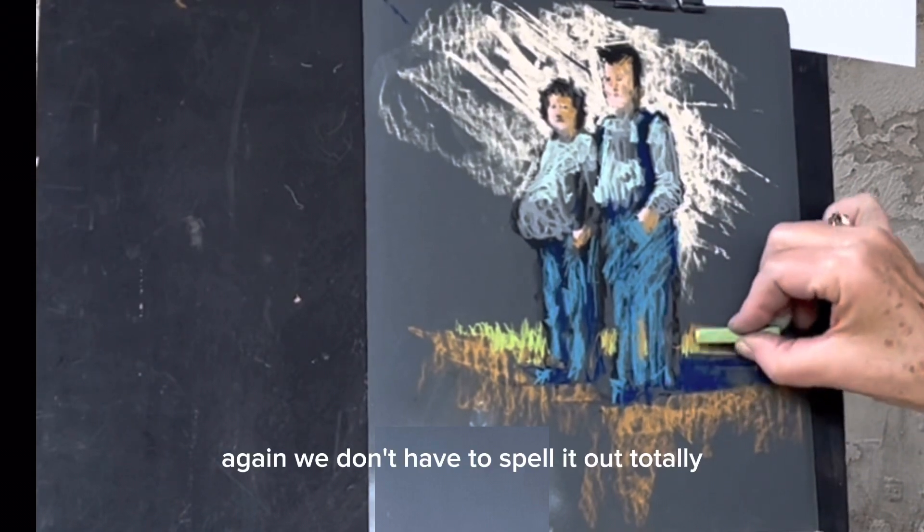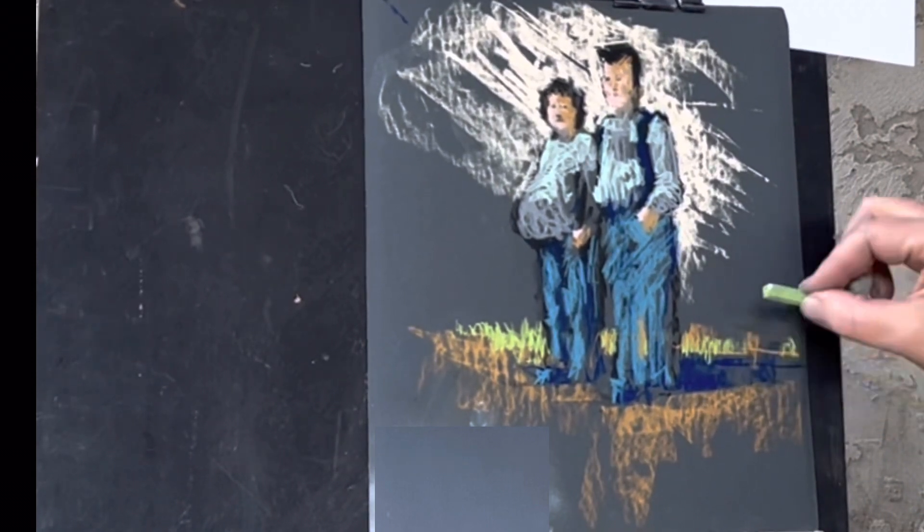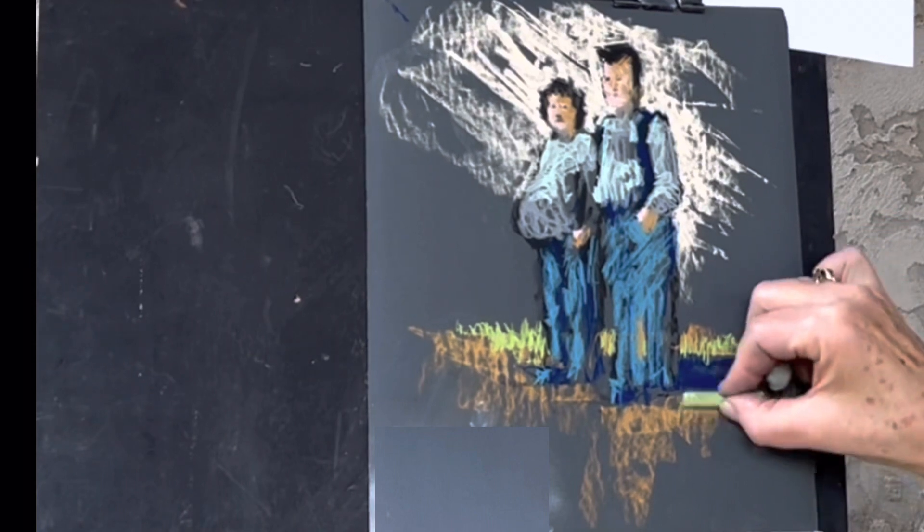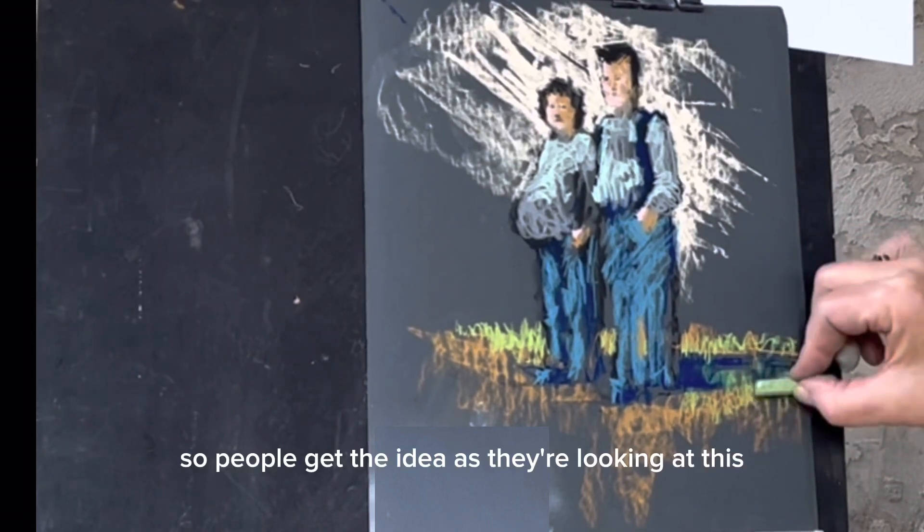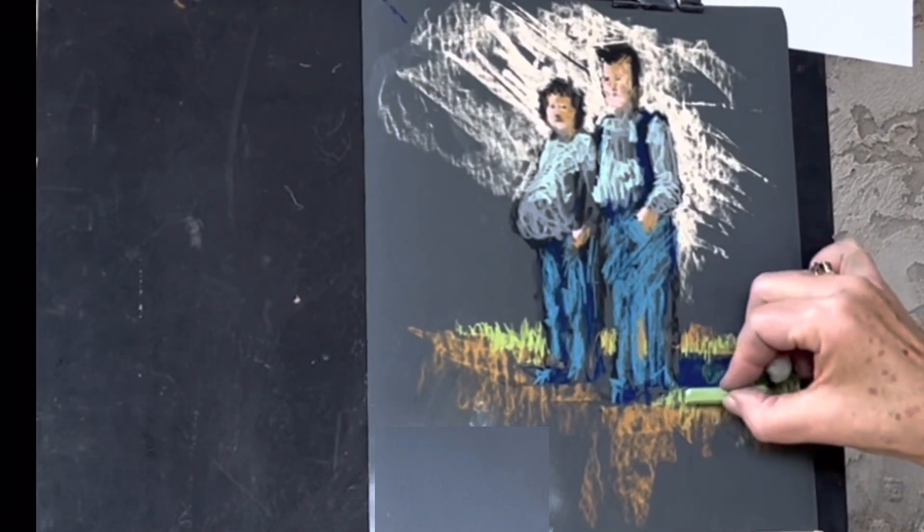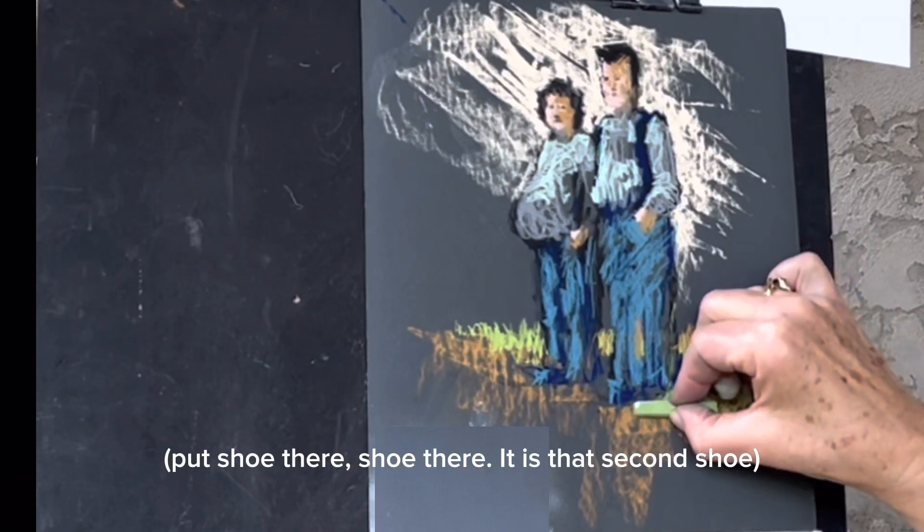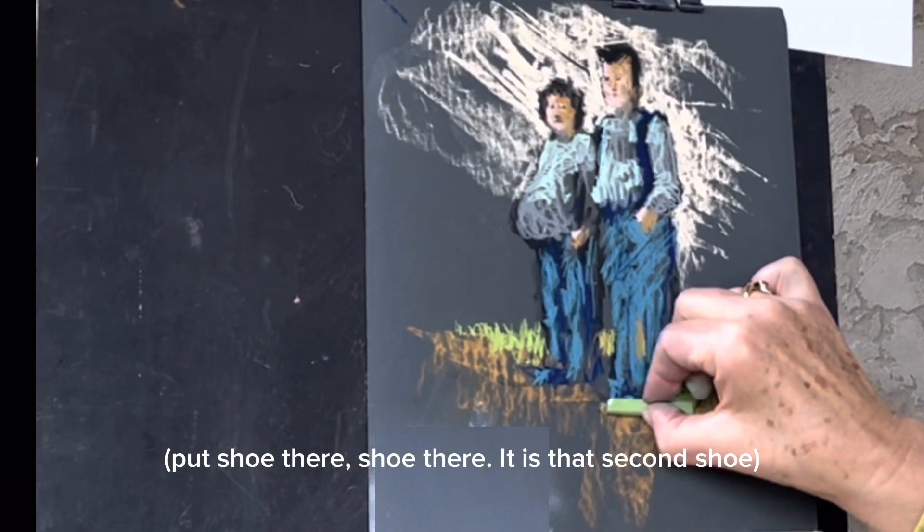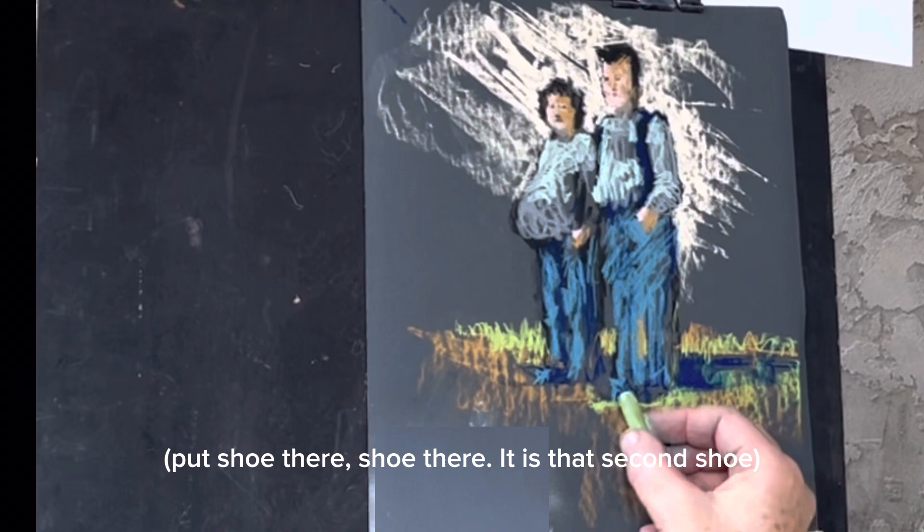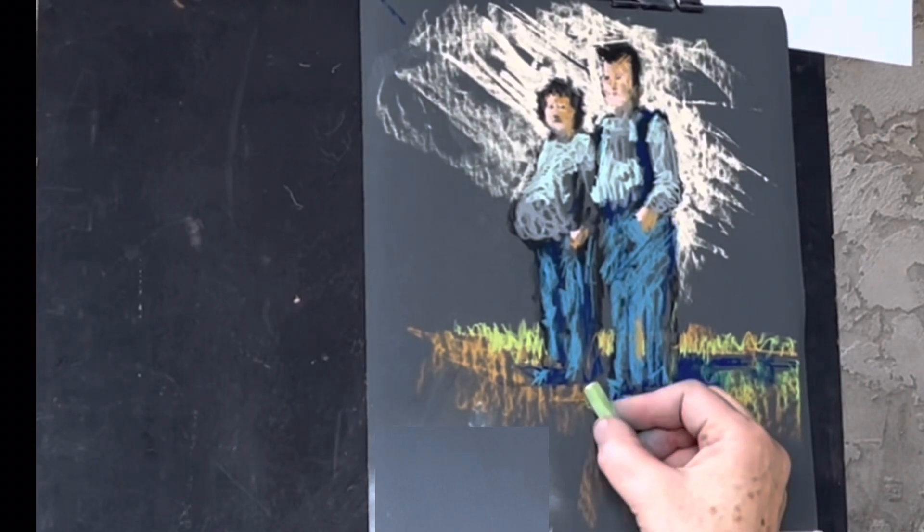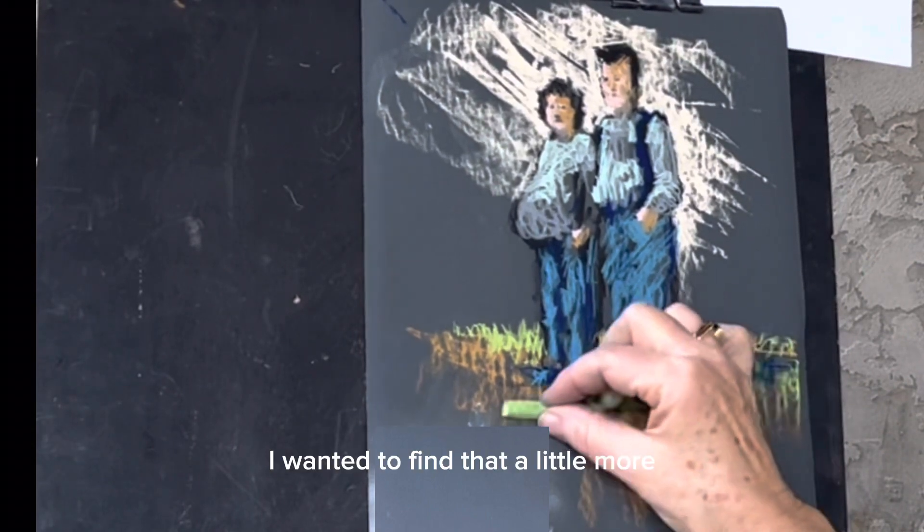Again, we don't have to spell it out totally. Just enough. So people get the idea as they're looking at this. Foot. Shoe there. Shoe there. Is that secondary shoe. Yeah, I wanted to find that a little more.